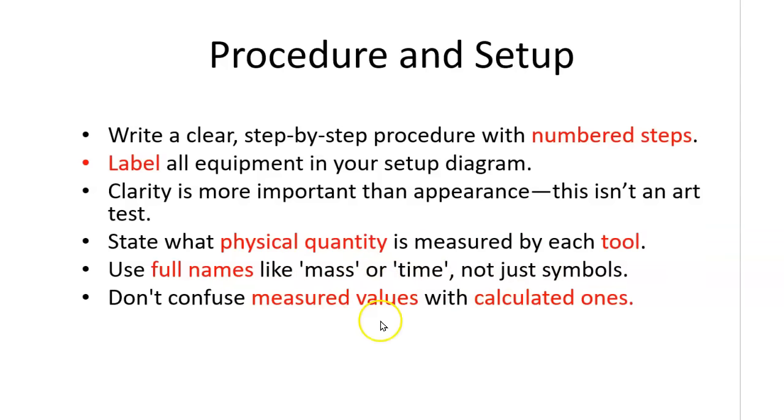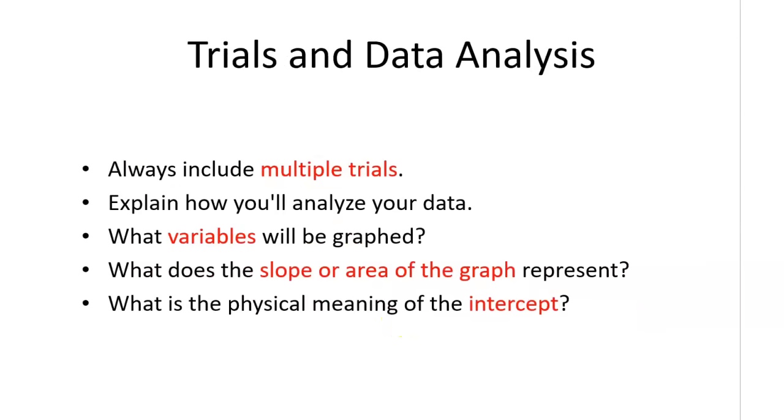Don't confuse measured values, which you got from the experiment, with calculated ones. Always include multiple trials. So in your procedure, as you're saying what you're going to do, at the appropriate step, make sure you say you're going to repeat this four times or five more times. This decreases uncertainty and increases the reliability of your data.